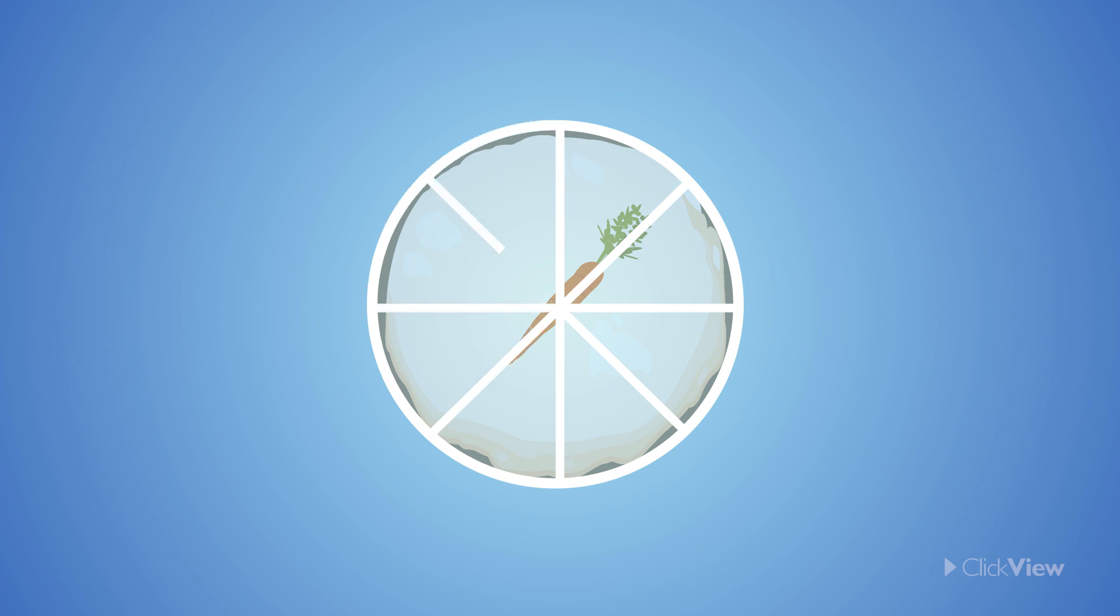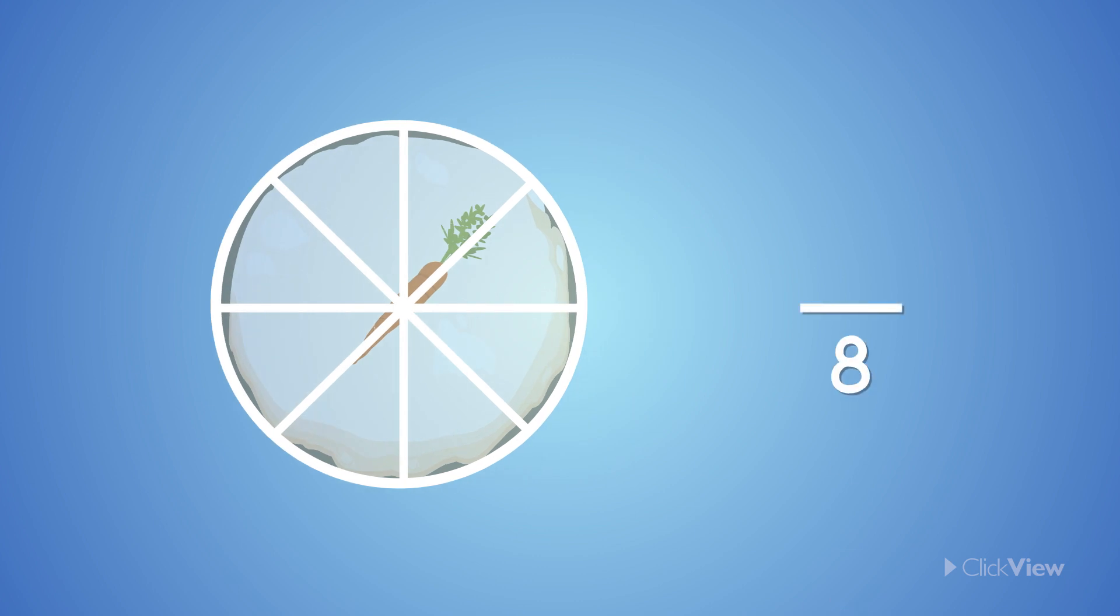First of all, how many pieces made up the whole cake? That's right, eight. Now, how many cake pieces did Lily get? One.